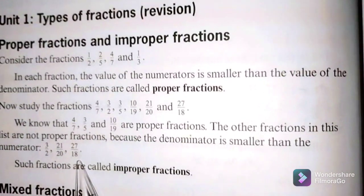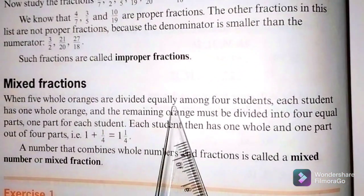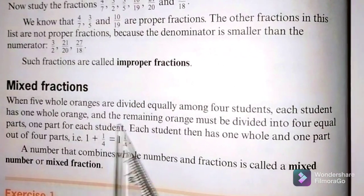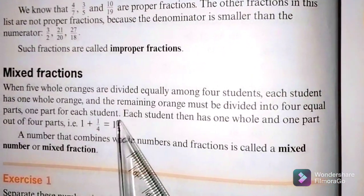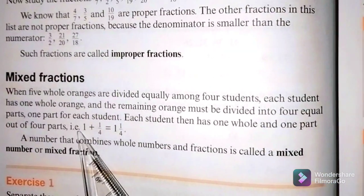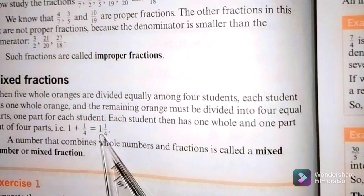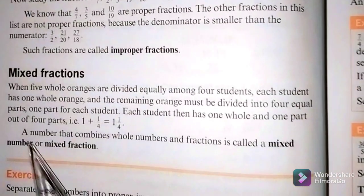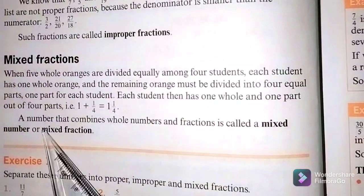Such fractions are called improper fractions. In the next part we have mixed fractions. When five whole oranges are divided equally among four students, each student has one whole orange and the remaining oranges must be divided into four equal parts. Each student then has one whole and one part out of four parts — that is one whole orange plus a quarter of an orange, giving us one and one quarter. A number that combines whole numbers and fractions is called a mixed number or a mixed fraction.